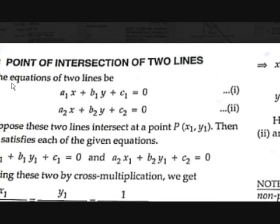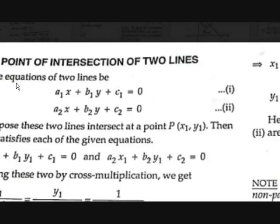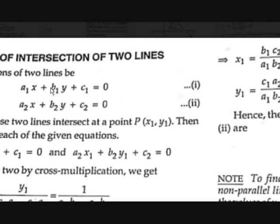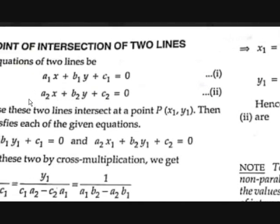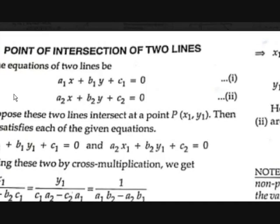Now let's discuss a concept called the point of intersection of two lines. If there are two lines they may intersect — in most cases they will. But in some cases, when A1=A2 and B1=B2, these lines do not intersect or will coincide.